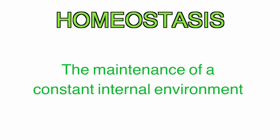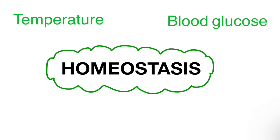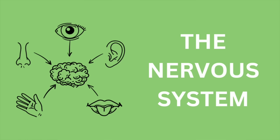First of all, the definition of homeostasis. Homeostasis is the maintenance of a constant internal environment within your body. All that means is it balances the temperature, the blood sugar levels, the salt levels in your body, and also your water. We will go into each of those in a little bit more depth later on in the video.